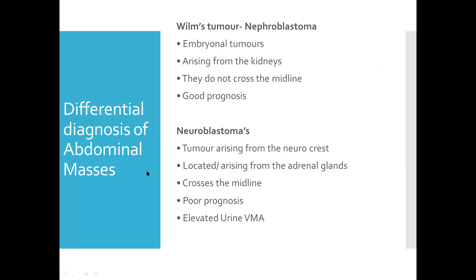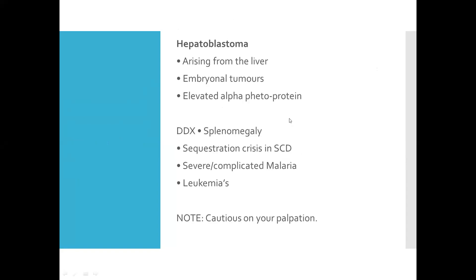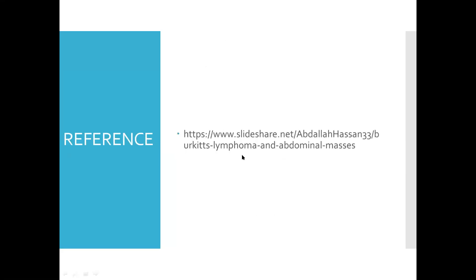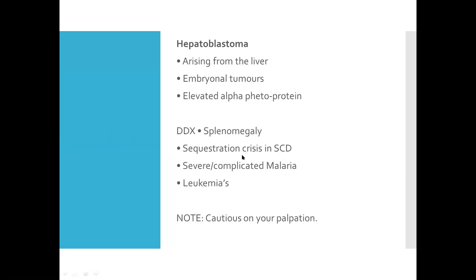Differential diagnoses for abdominal masses include Wilms tumor, neuroblastoma, and hepatoblastoma. Differential diagnoses for splenomegaly include sequestration crisis in sickle cell disease, severe complicated malaria, and leukemia. That's all about Burkitt's lymphoma. Thank you.